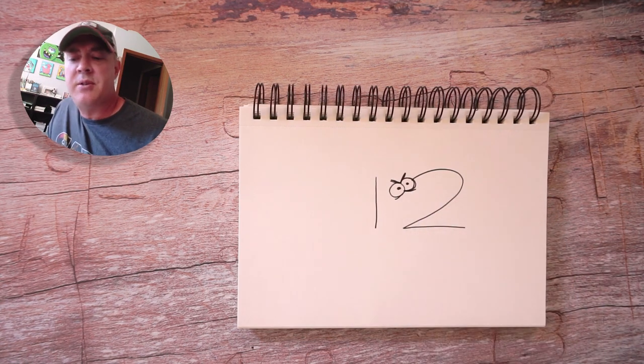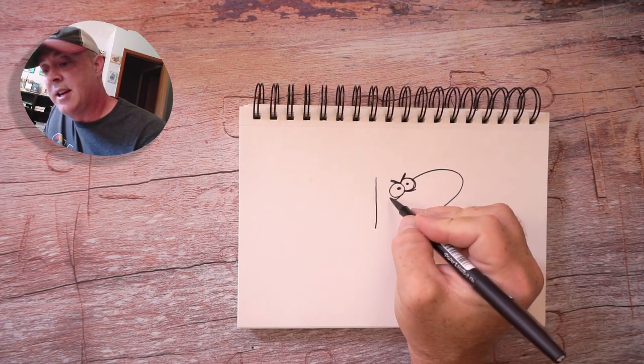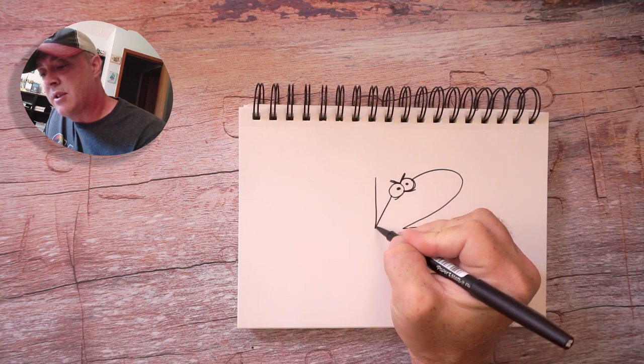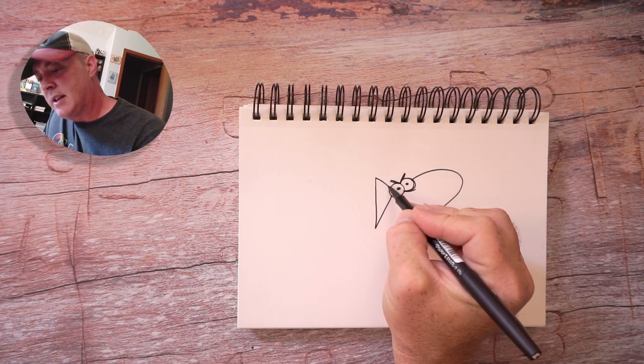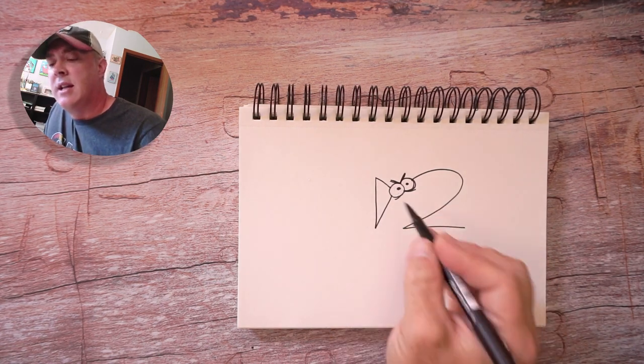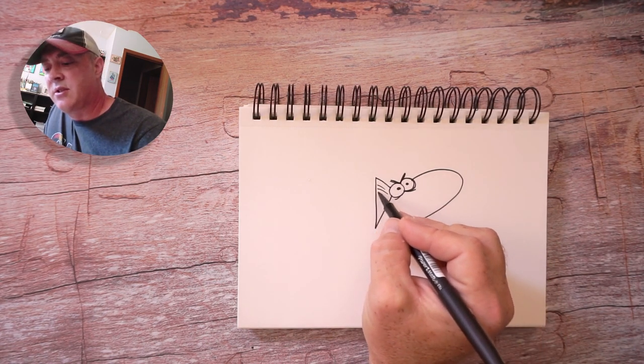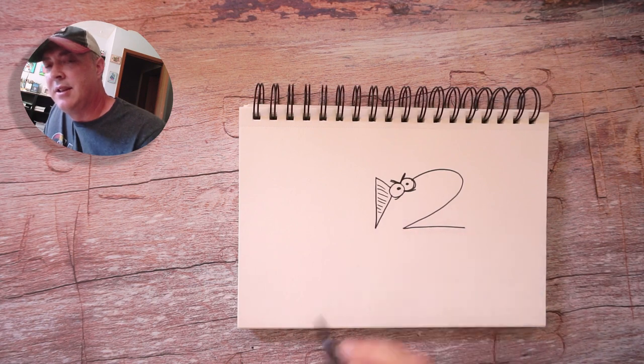And then what we're going to do is we're going to draw a line from the eye down to the bottom of the one, and from the top of the one we're going to draw another line right there. That's going to create the fin, and let's just draw some lines like that. There you go.